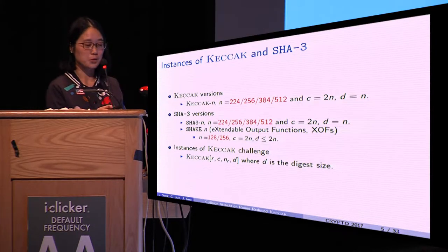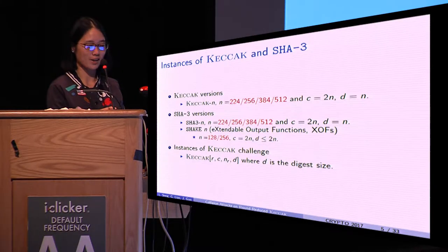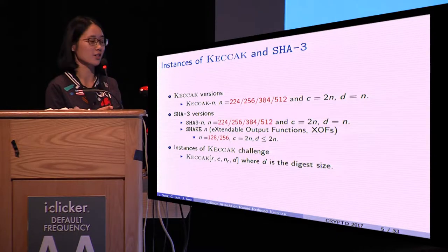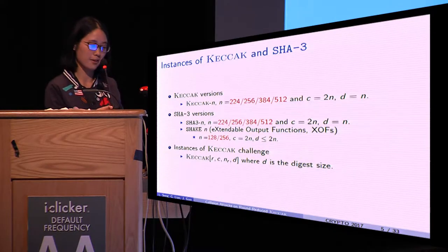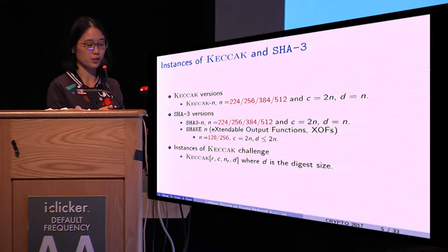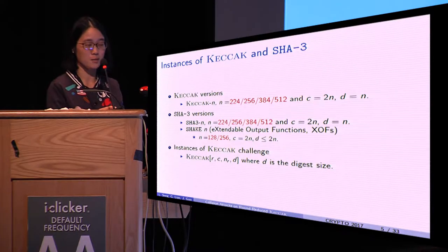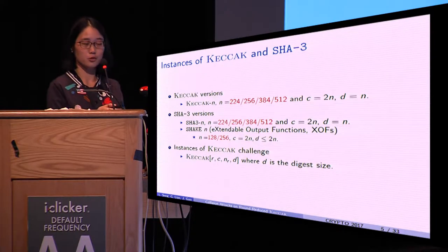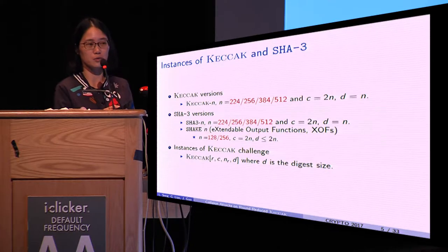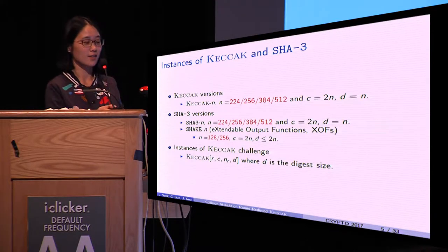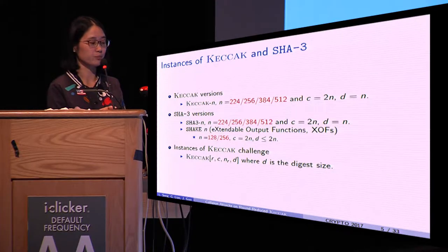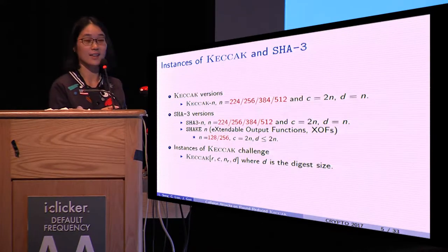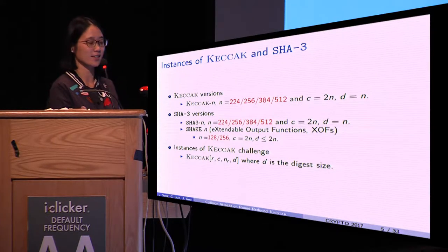To promote cryptanalysis against KECCAK, the designers launched challenges regarding collision attacks and pre-image attacks, where versions of lower security levels were proposed. These versions were denoted by KECCAK[r,c,d], where d is the digest size.